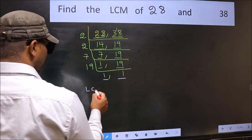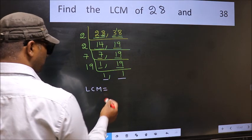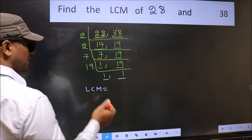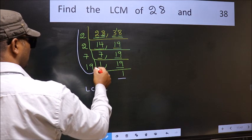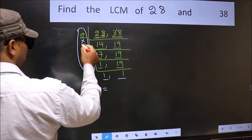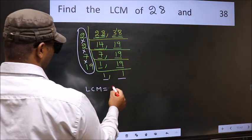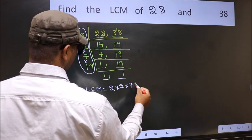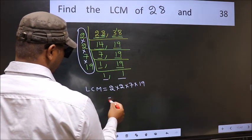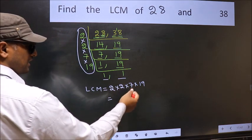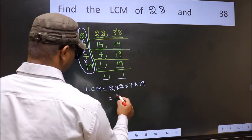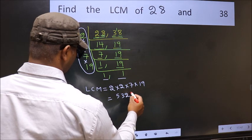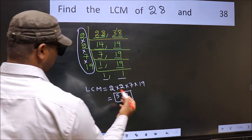So our LCM is the product of these numbers. That is 2 into 2 into 7 into 19. When we multiply these numbers, we get 532. This is our LCM.